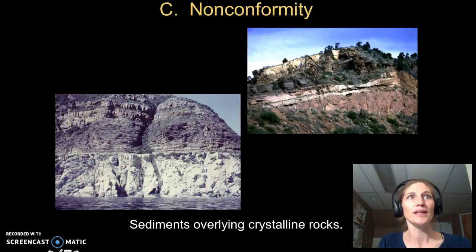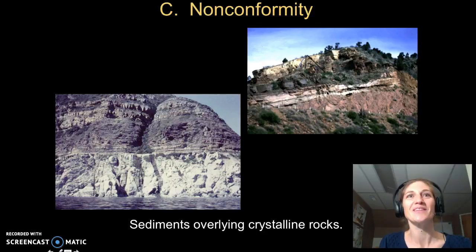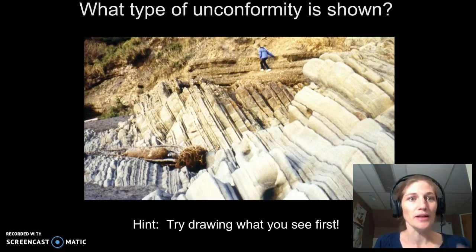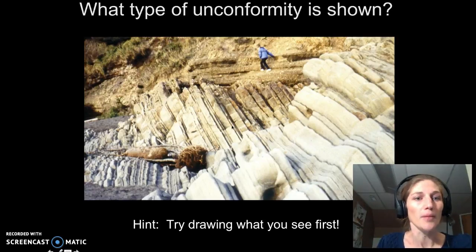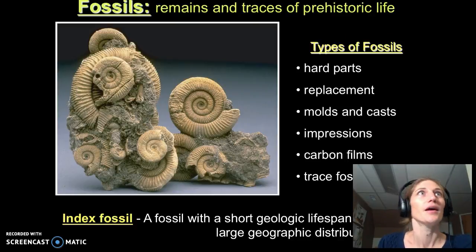A nonconformity is where we have sedimentary rocks overlying crystalline rocks — for example, granites below with nice flat horizontal sedimentary rocks above, or metamorphic rocks with horizontal sedimentary rocks above. It's simply the boundary between sedimentary rocks and either metamorphic or igneous rocks. To identify which unconformity you see in a given picture, always step back and draw the picture first. If you see angled sediments below and horizontal sediments above, that's an angular unconformity.